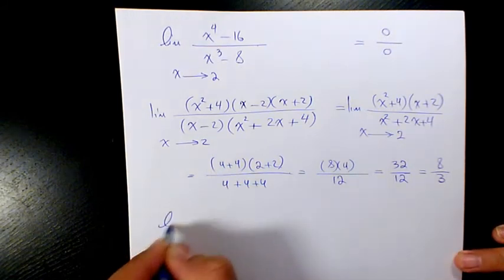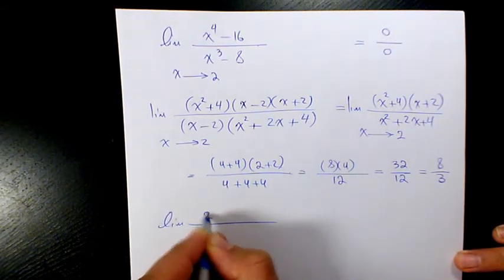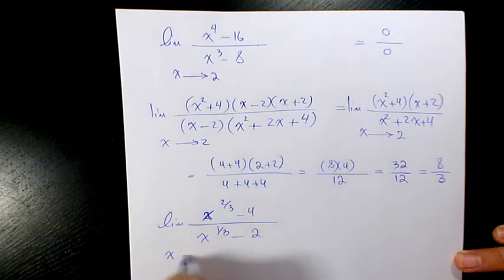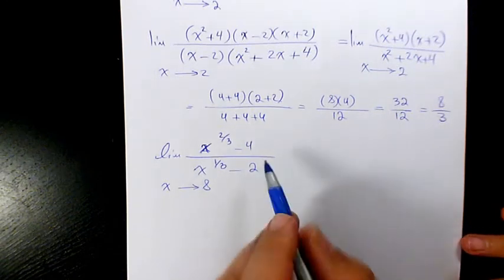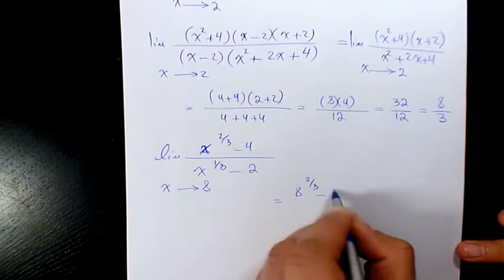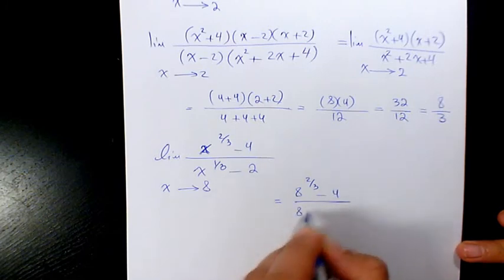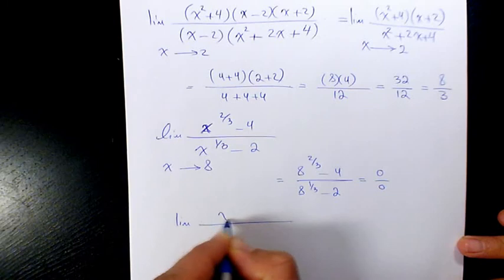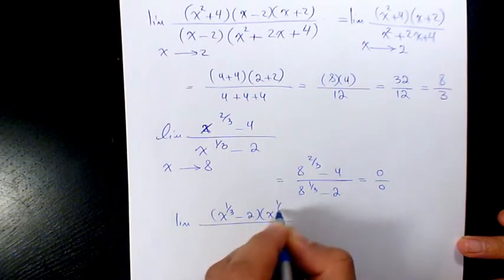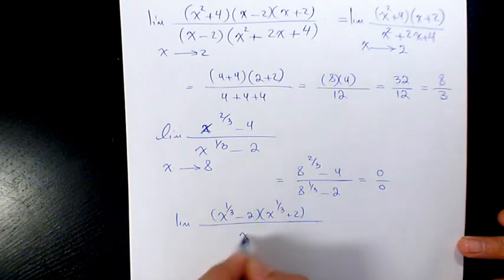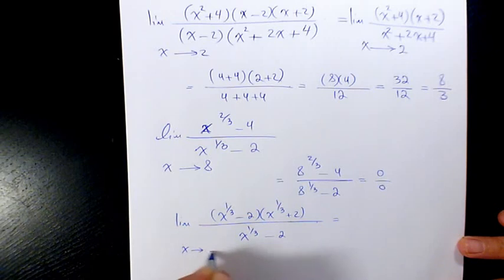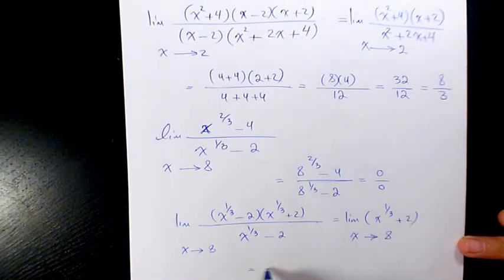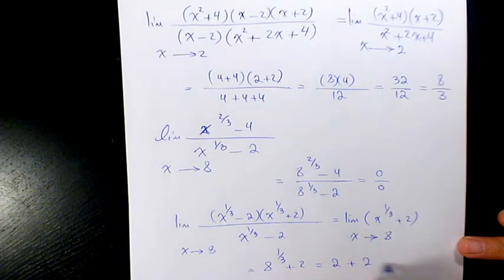Next example: the limit of (2x to the power of 2/3 minus 4) over (x to the power of 1/3 minus 2) when x is approaching 8. Substituting gives 0 over 0. Factoring the numerator as 2 times (x to the power of 1/3 minus 2)(x to the power of 1/3 plus 2). Canceling (x to the power of 1/3 minus 2) gives the limit of 2(x to the power of 1/3 plus 2) as x approaches 8, which is 2 plus 2 equals 4.